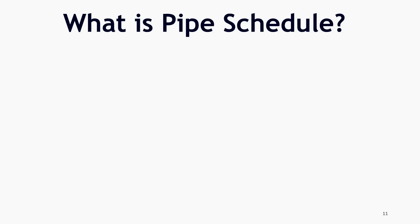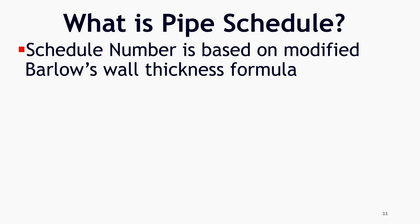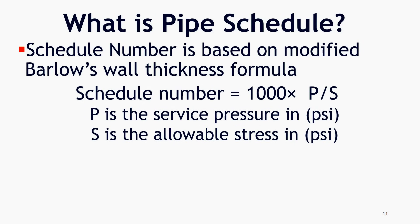What is pipe schedule? Pipe schedule is the way pipe wall thicknesses are mentioned. To simplify the ordering of the pipe, ASME committee has developed schedule number which is based on modified Barlow's wall thickness formula. The schedule number indicates approximate value of expression 1000 times P/S. Where P is the service pressure and S is allowable stress, both expressed in pound per square inch.